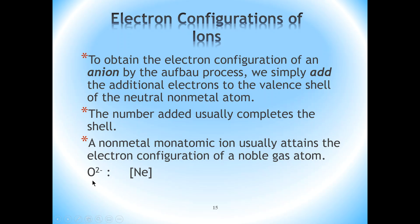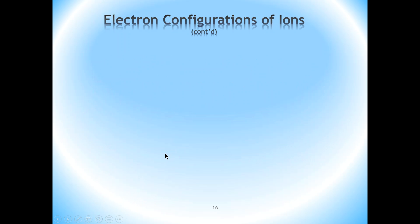For example, in the case of oxide, where you add two electrons to the oxygen atom, the electron configuration would be the same as neon. In the case of bromine, which has seven electrons on its outer shell, if you add one more electron, then the resulting electron configuration would be the same as that of krypton. So when it comes to writing the electron configuration of monatomic anions, that's a relatively simple process.